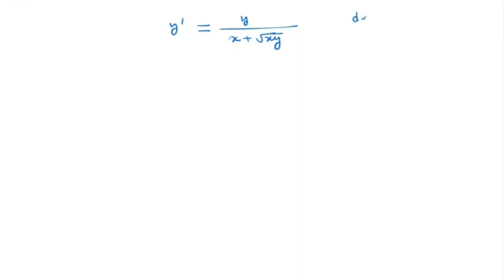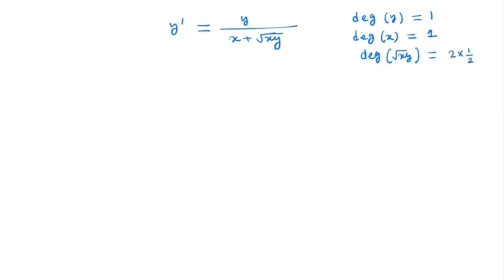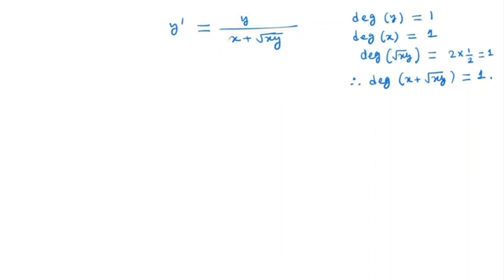Note that the degree of y is 1. The degree of x is also 1, and the degree of root under xy is also 1, because the degree of xy is 2 and because of the root we have half — so 2 times half is 1. Therefore the degree of x plus root xy is 1. The numerator degree is 1 and the denominator degree is 1, so the function y divided by (x plus root under xy) is a homogeneous function of degree 0.